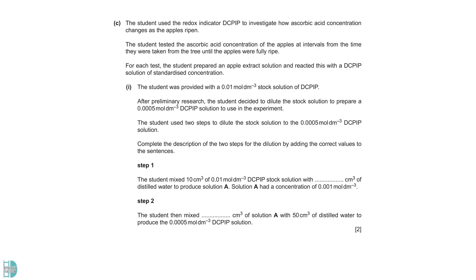Part C is about dilution. In step 1, the student performs a dilution by a factor of 1 over 10. In this case, mix the stock solution with distilled water in a 1 to 9 ratio. So, adding 10 cm³ of 0.01 mol per dm³ DCPIP with 90 cm³ of water will give you a new solution, which is 0.001 mol per dm³.